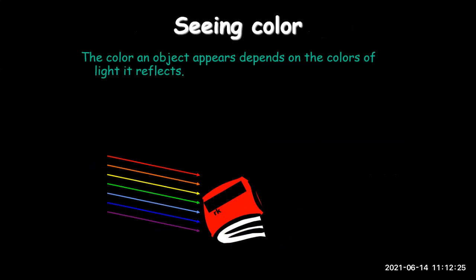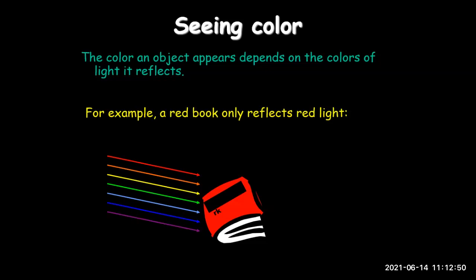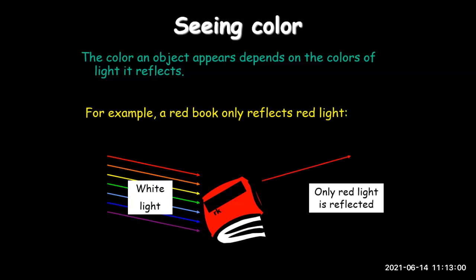The color an object appears depends on the color of light it reflects. If an object is red, it will reflect red light only. Our white light consists of seven colors, and the object reflects only its own color. For example, a red book only reflects red light.